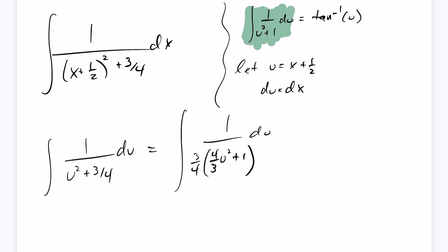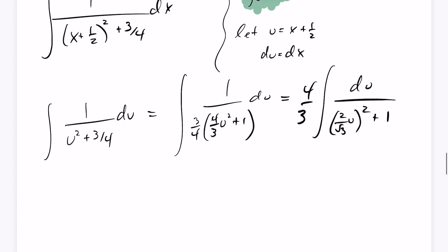Okay, now that I've factored out the 3 quarters in the denominator, I'm going to rewrite this with the 4 thirds out front. This becomes the integral of du over, I'll rewrite this, 2 over the square root of 3u, all quantity squared plus 1. And you can see I now almost have this in the form that I'm looking for. This is 1 over u squared plus 1.